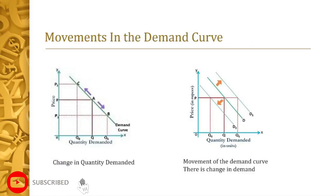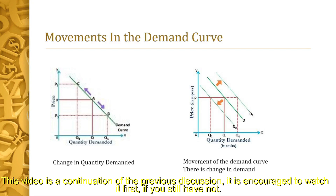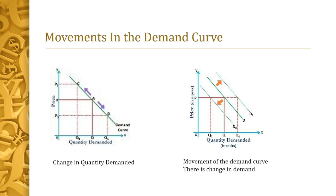Now we have movements in the demand curve. Prices may go up or down, and that is represented by the quantity demanded, but there is no change in the demand curve itself. There is no increase or decrease in the demand curve — there is only a change in price, and when there is a change in price, the quantity demanded also changes, as represented in the first graph as explained in the previous slide.